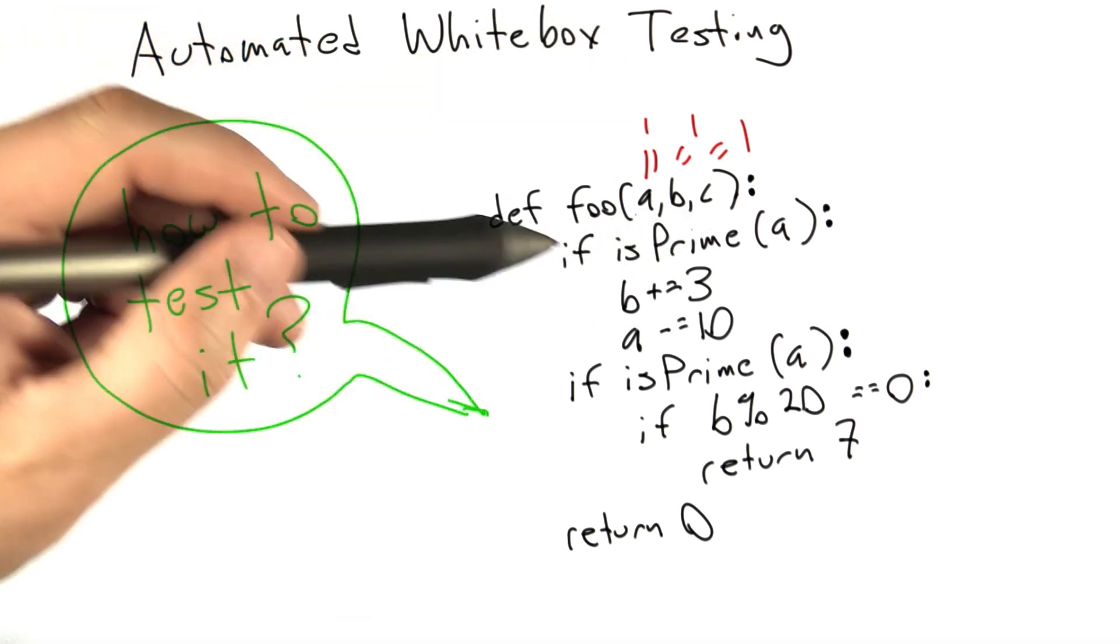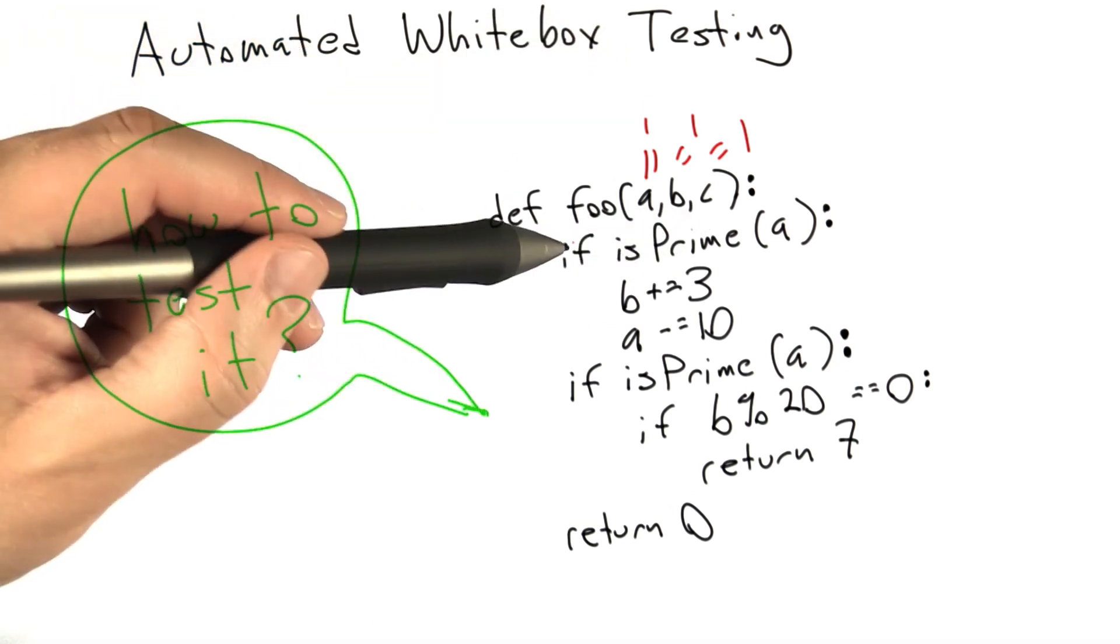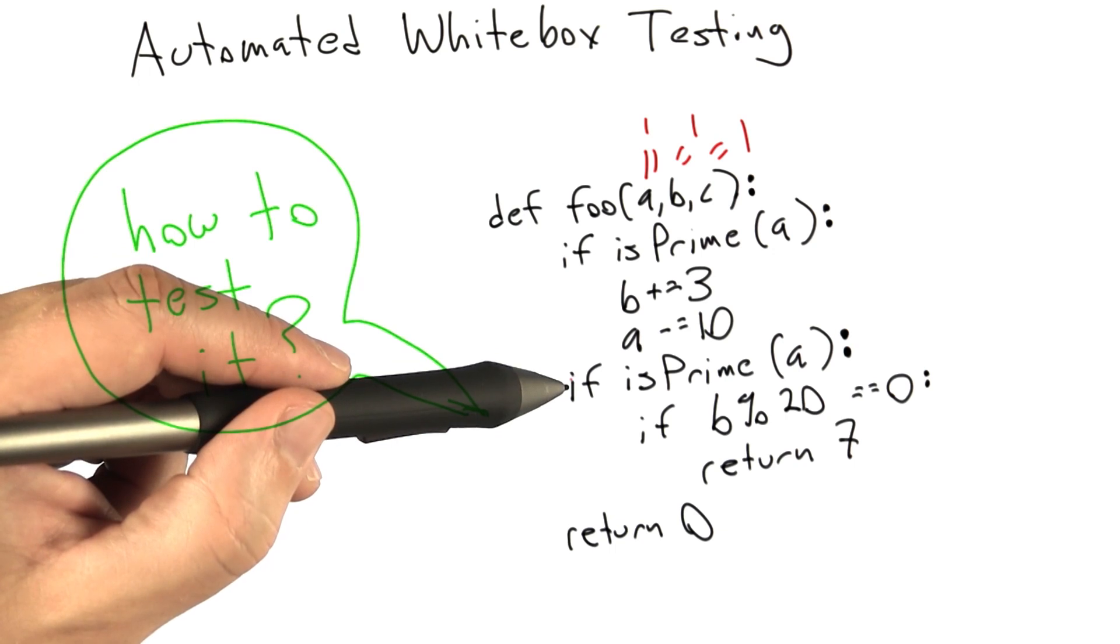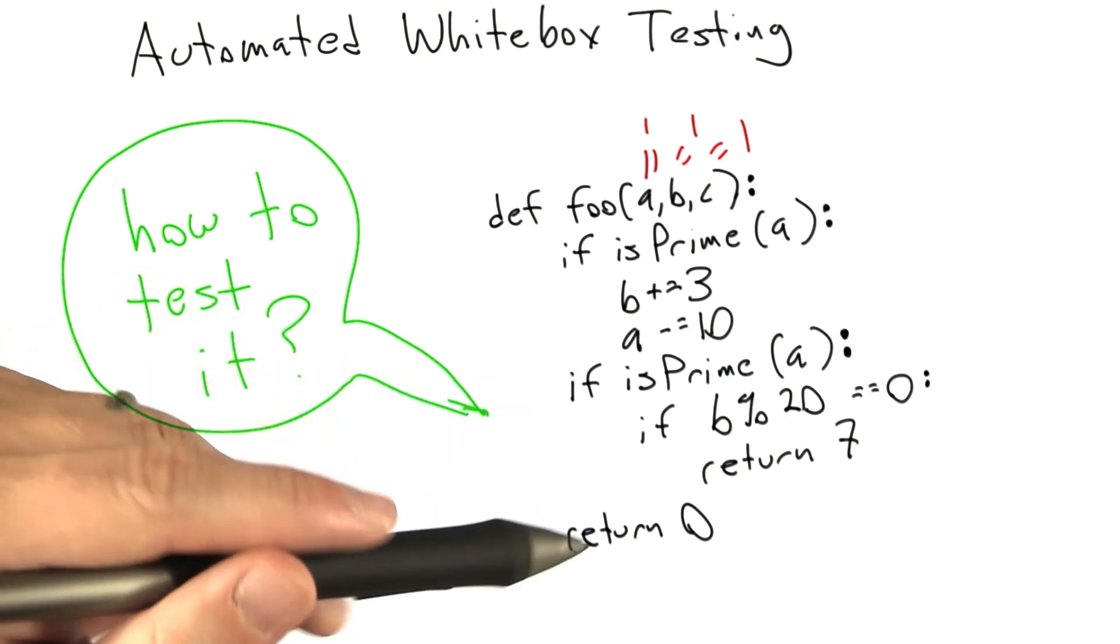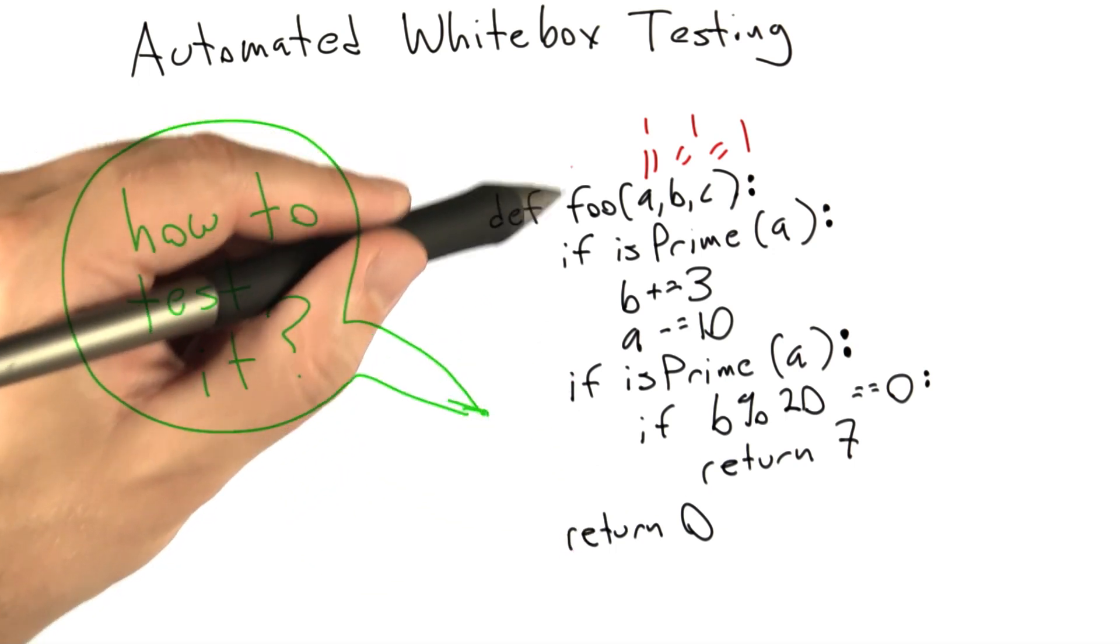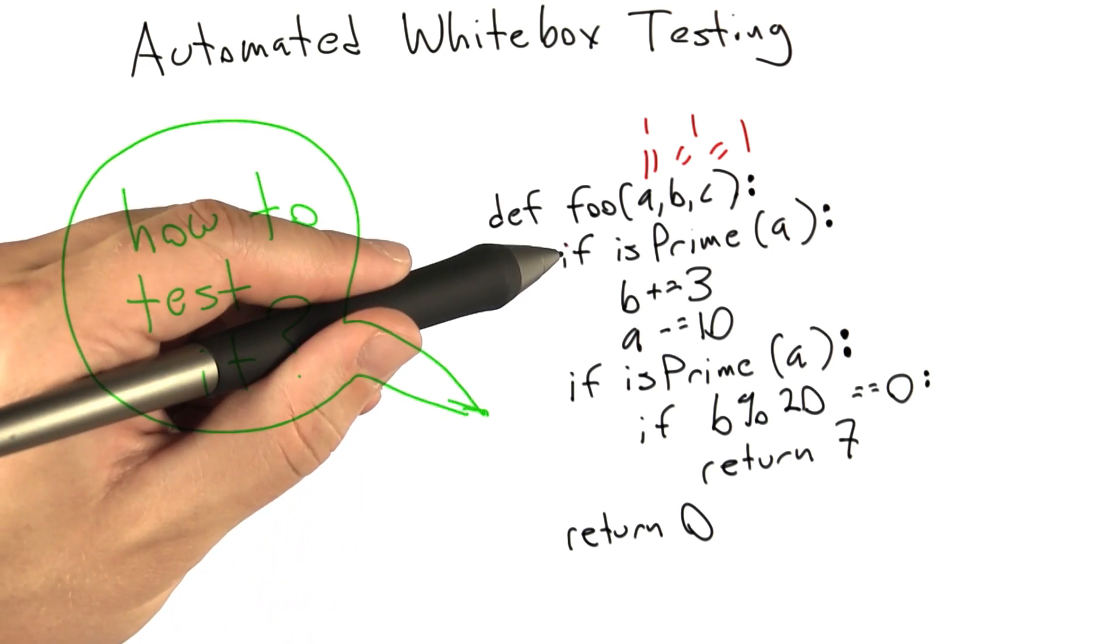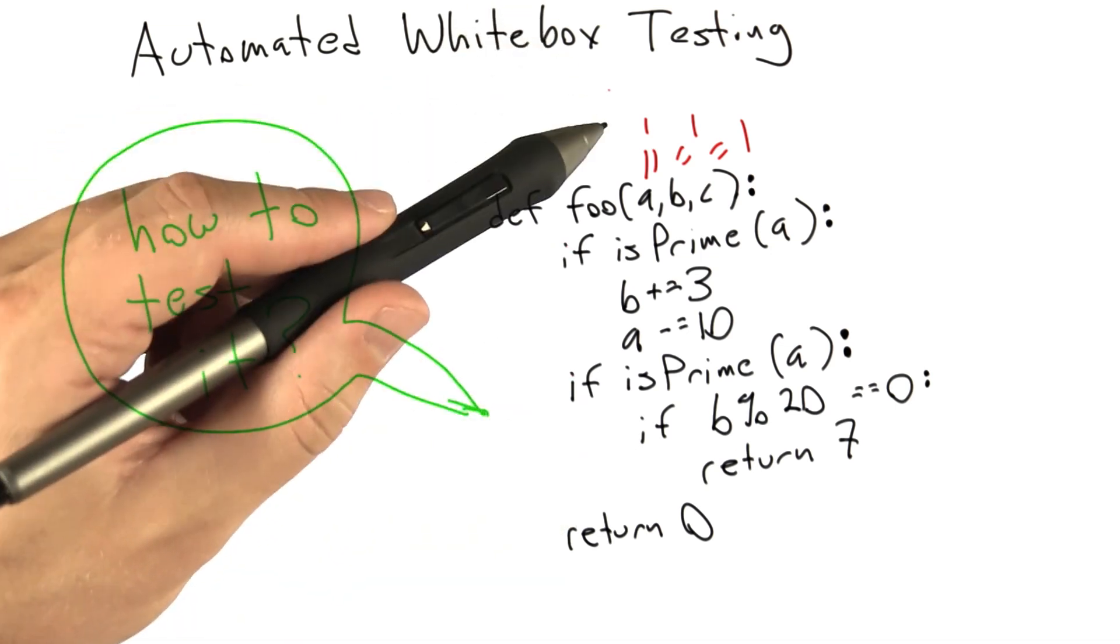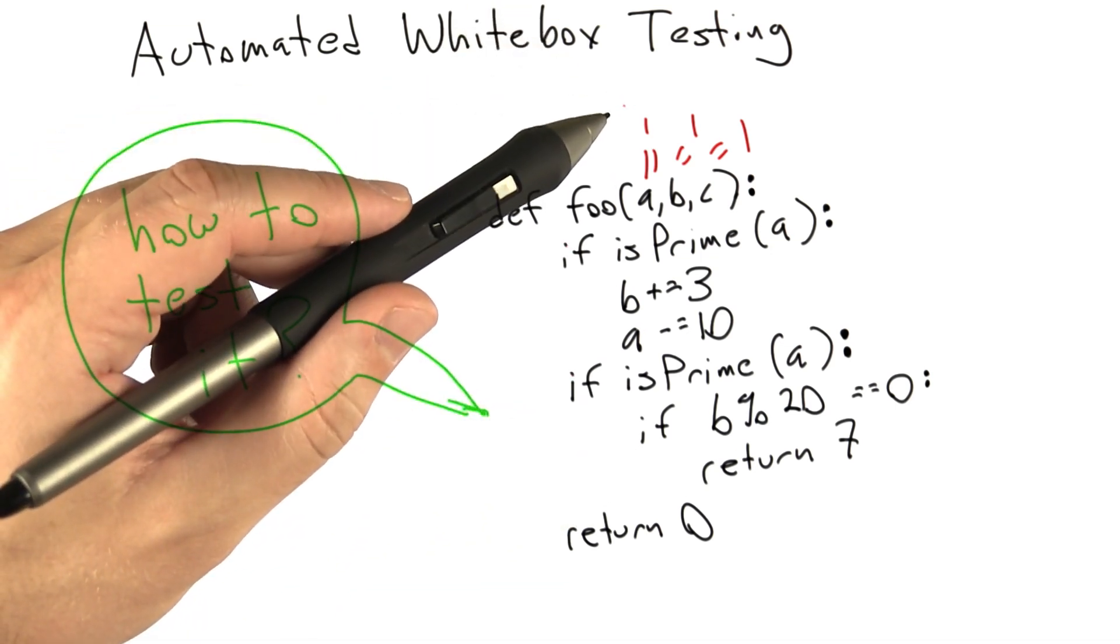It's going to execute the code. The first question is, is A a prime number? It's not. It wasn't prime the first time, it's still not prime, so we're going to return 0. The automated testing tool has seen a path through the code that didn't take both of the if branches, so it's going to try to construct a new set of inputs that take a different path.